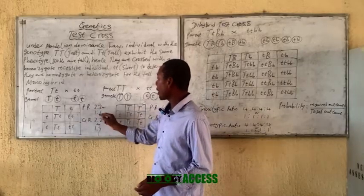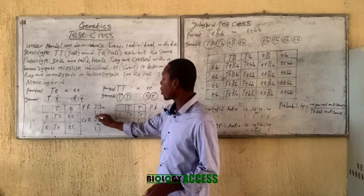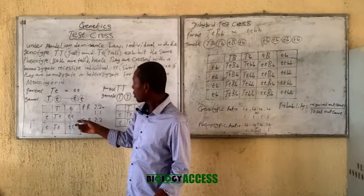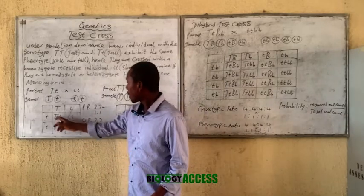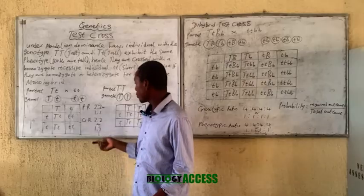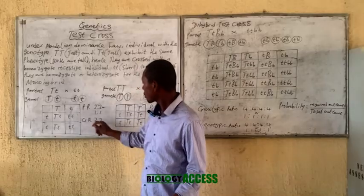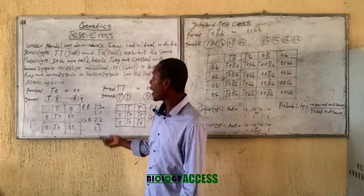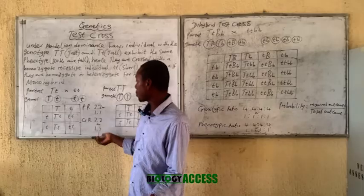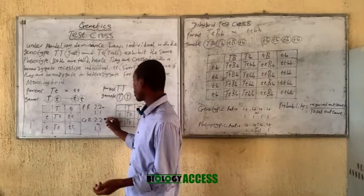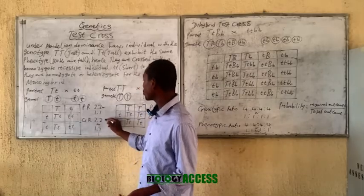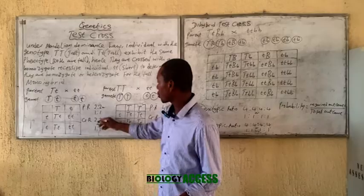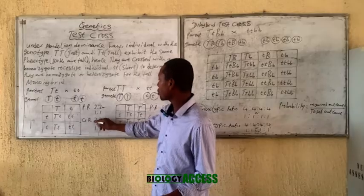Which you can simplify by dividing two by two to get one ratio one. For the genotype, these two are the same and these two are the same, giving us a genotypic ratio of one ratio one.